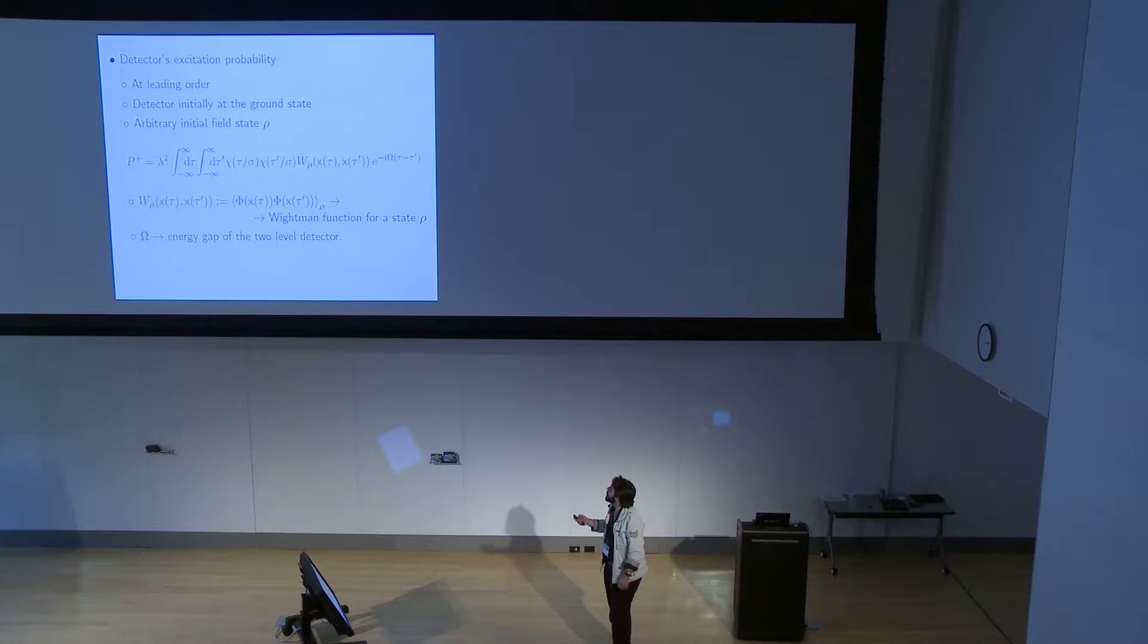With this model, we can calculate excitation probability. This is the detector is initially at the ground state. And we calculate the probability that the detector goes to the excited state.